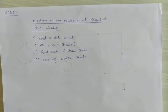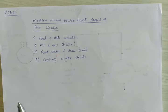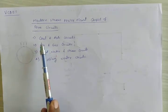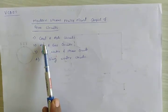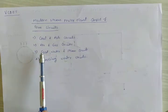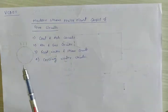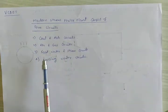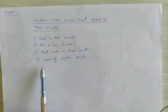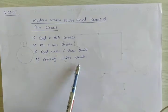Now we discuss the actual layout of the modern steam power plant. It consists of four circuits: first is the coal and ash circuit, second is the air and gas circuit, third is the feed water and steam circuit, and the last one is the cooling water circuit.